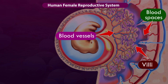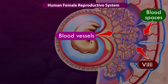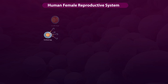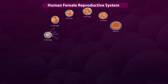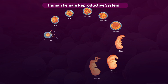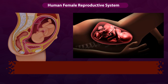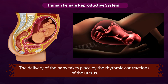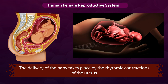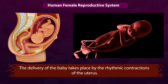Here, the nutrients and oxygen are absorbed and wastes are released into the mother's blood. The development of the baby inside the mother's womb takes approximately 9 months. This period is called the gestation period. The delivery of the baby takes place by the rhythmic contractions of the uterus.